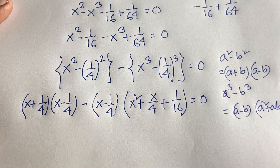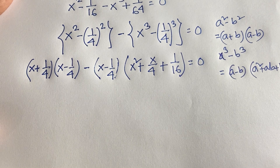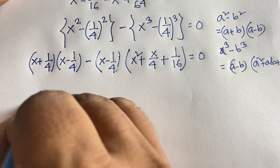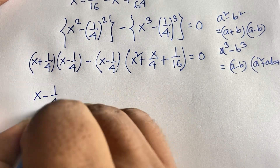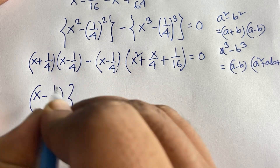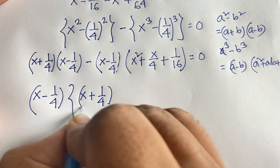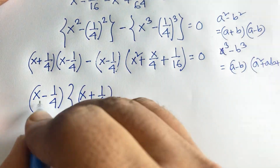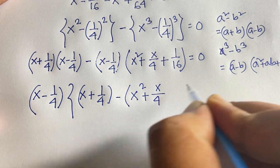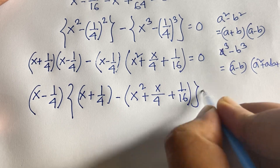Now (x minus 1 over 4) is a common factor. Taking it out: (x minus 1 over 4) times [(x plus 1 over 4) minus (x squared plus x over 4 plus 1 over 16)] equals 0.